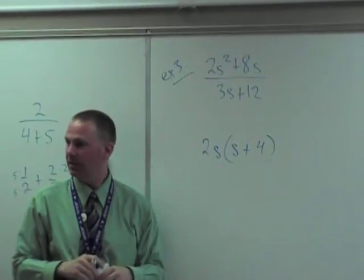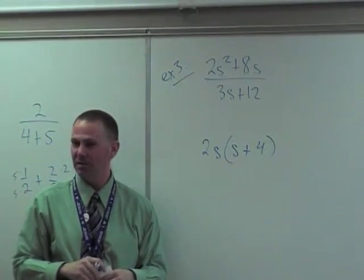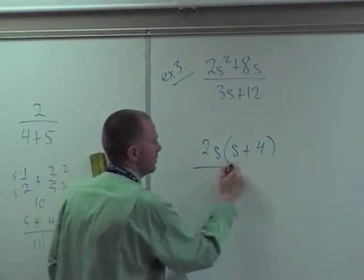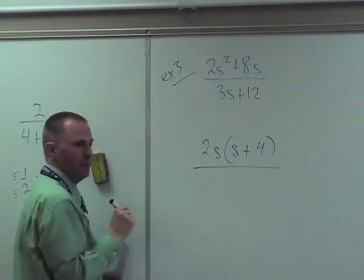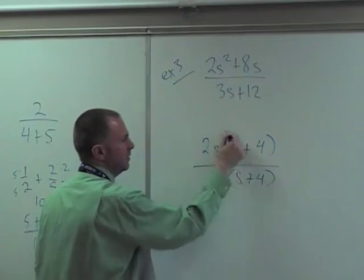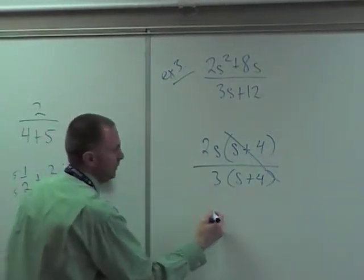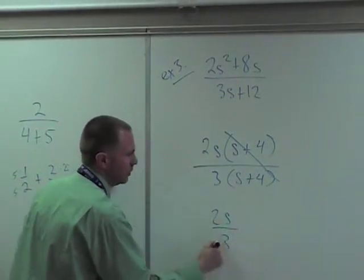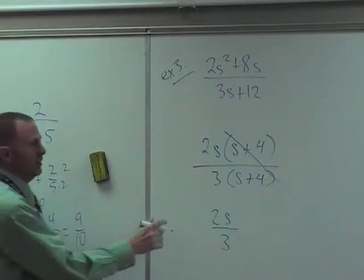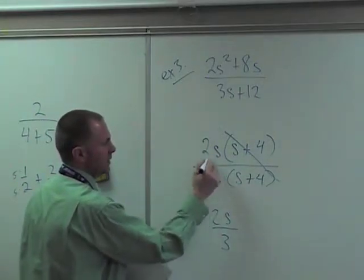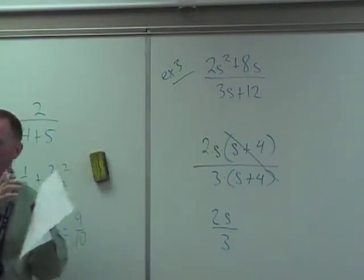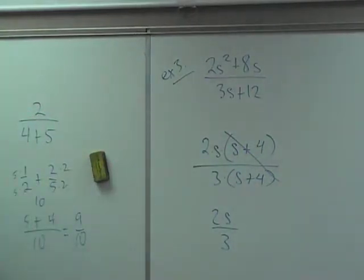We're going to factor out of the bottom. What can I factor out of the bottom? A 3. And what do I get left inside? S plus 4. Oh my goodness, and s plus 4 over s plus 4 is 1, leaving 2s over 3. Now these are not pieces. There's no plus sign between anything unless you look inside the parentheses, but the parentheses represents one thing. It doesn't matter how many terms are in the parentheses.